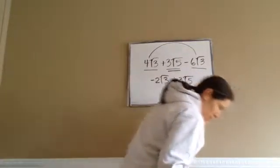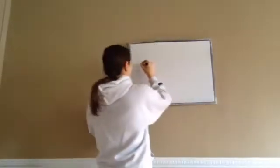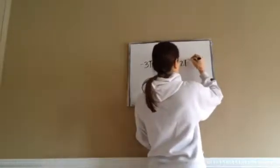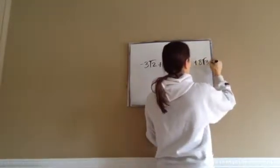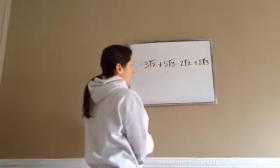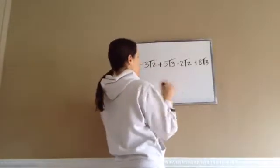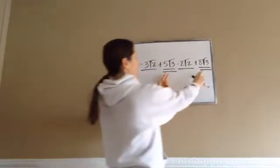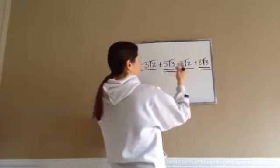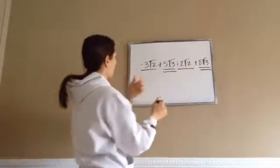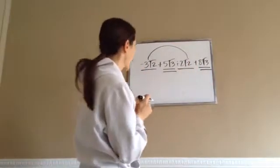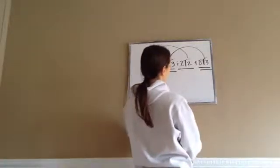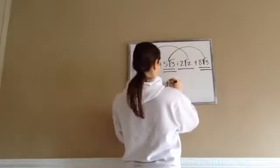Let's try this next one: negative 3 square root of 2 plus 5 square root of 3 minus 2 square root of 2 plus 8 square root of 3. Hopefully you can realize that we have two different radical expressions that are like terms — something square root of 2, something square root of 2, something square root of 3, something square root of 3. I'm going to change this minus to a plus negative. So now we're going to add our like terms: negative 3 plus negative 2 would be negative 5 square root of 2.